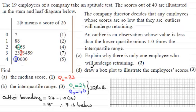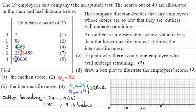Now in part D, we've got to draw a box plot to illustrate the employee's scores. First of all, we need to put a scale down. We can see that we're going from the lowest value of 7 to the highest value of 40. I'm going to put 0 here and go up in steps of 10 — so 10, 20, 30, 40, and 50. This represents the score.